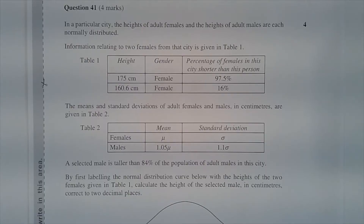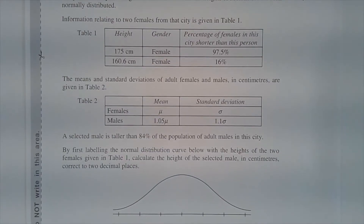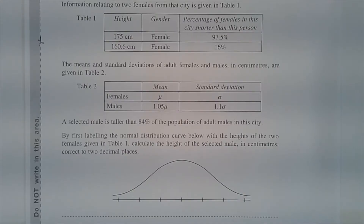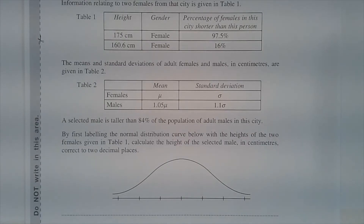Question 41. In a particular city, the heights of adult females and the heights of adult males are each normally distributed. Information relating to two females from that city is given in Table 1. The means and standard deviations of adult females and males in centimetres are given in Table 2. A selected male is taller than 84% of the population of adult males in this city. By first labelling the normal distribution curve below with the heights of the two females given in Table 1, calculate the height of the selected male in centimetres correct to two decimal places.